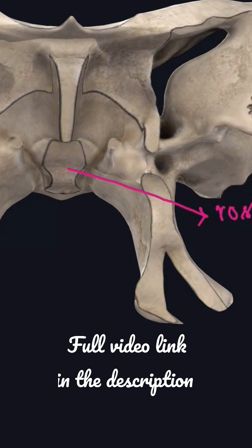This rostrum of the sphenoid articulates with the grooved upper margin of the vomer, between the two diverging alae. It articulates with the upper margin of the vomer bone.